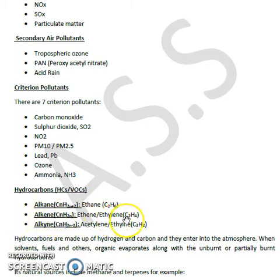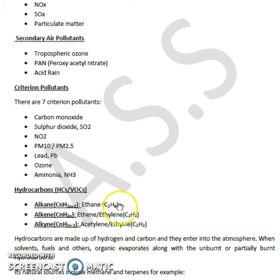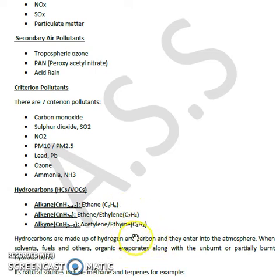Second is alkenes. Third is alkynes, having a general formula CnH2n−2. For example, C2H2, which is called acetylene. Ethylene is also called acetylene.